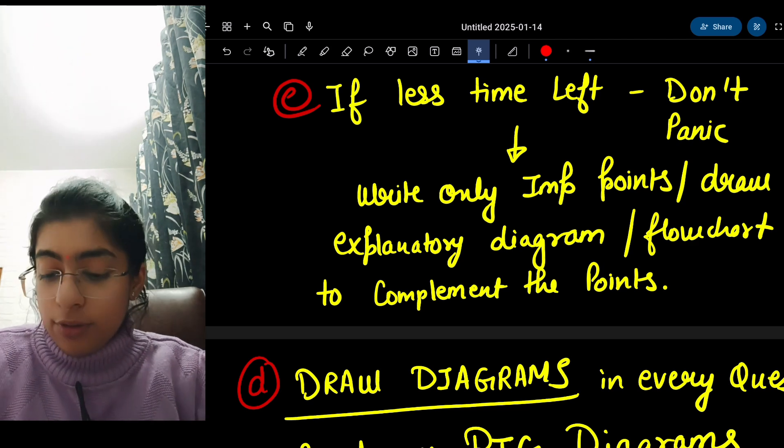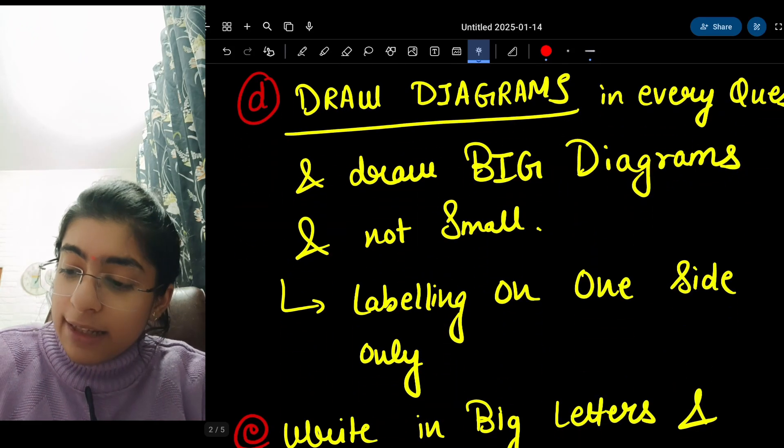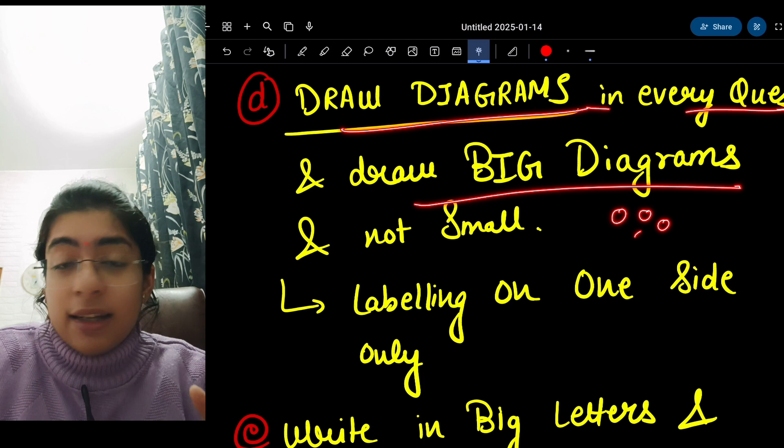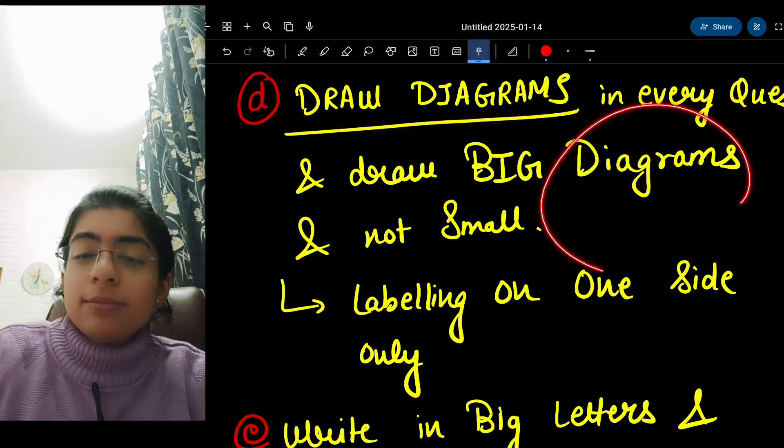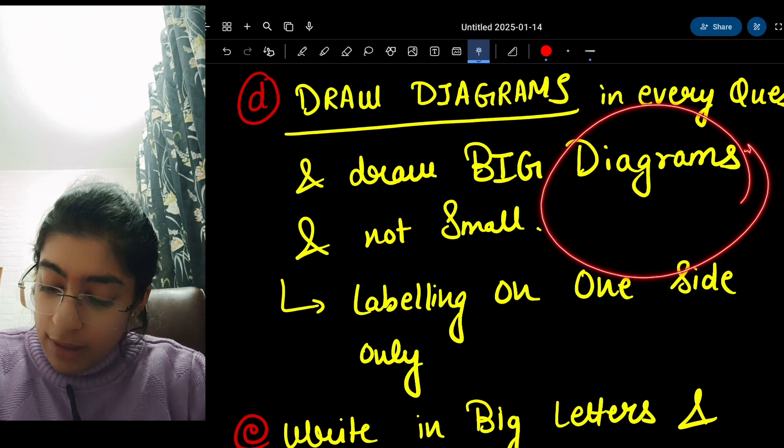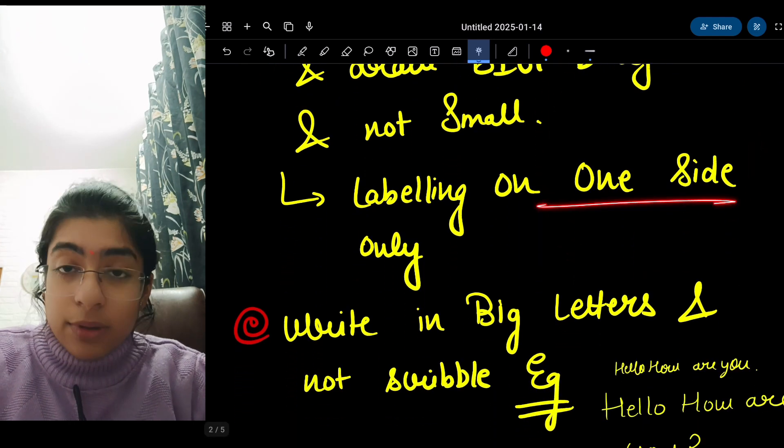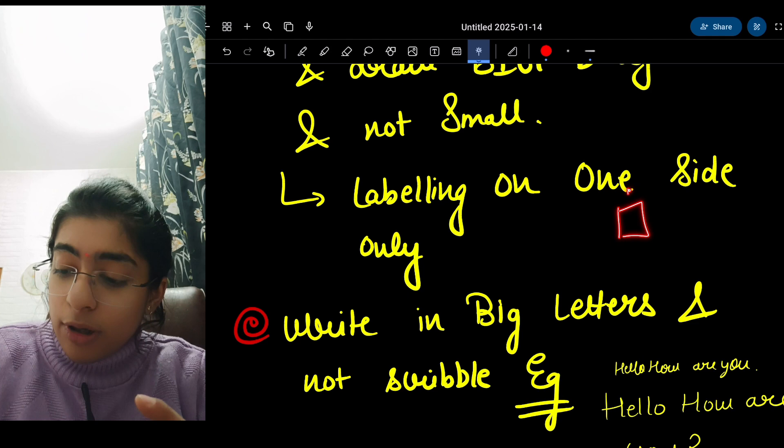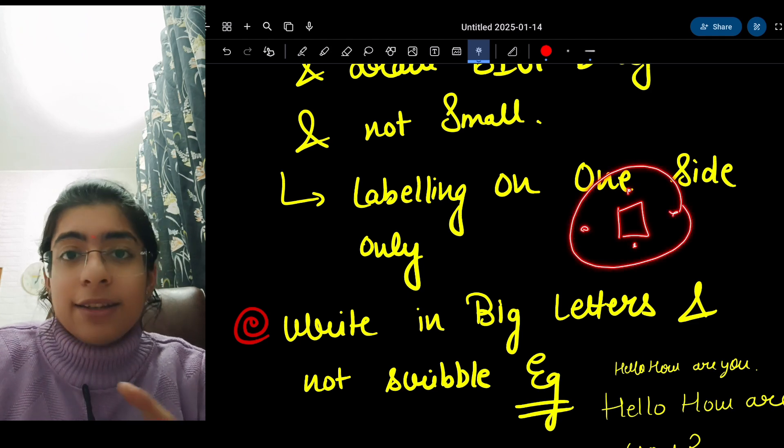Next, draw diagrams in every question and draw big diagrams. Small diagrams are very irritating. Draw big diagrams as much as you can, as much as your time allows. Labeling on one side only - right or left - and do not label on top, bottom, right, left 360 degrees.